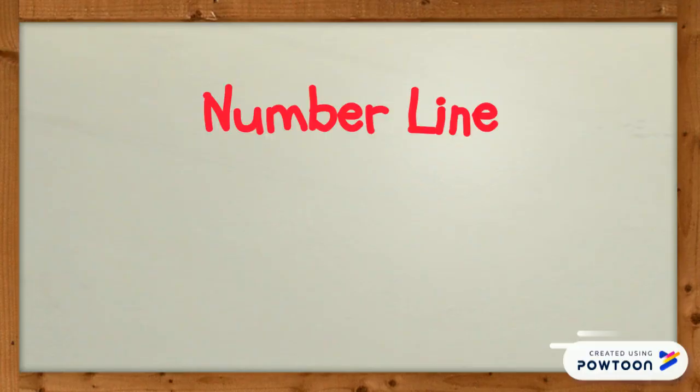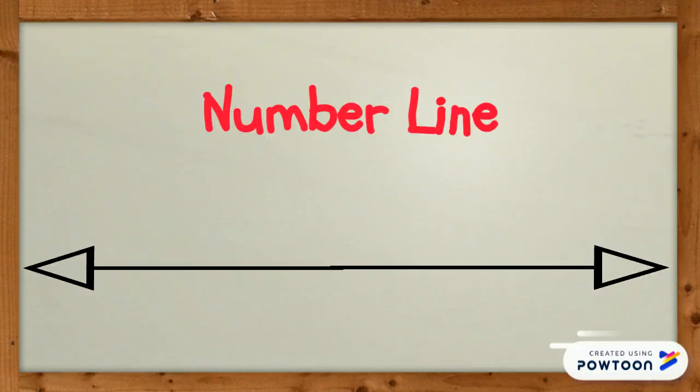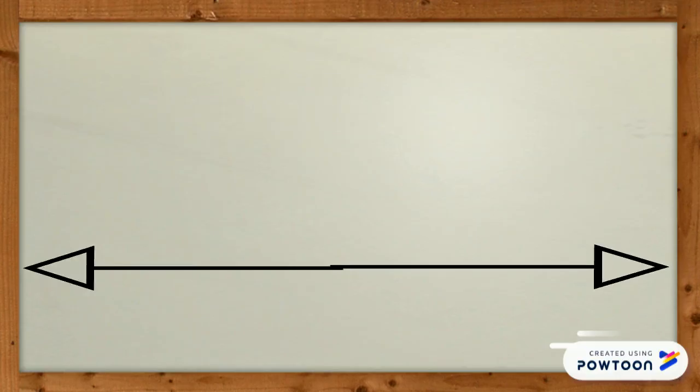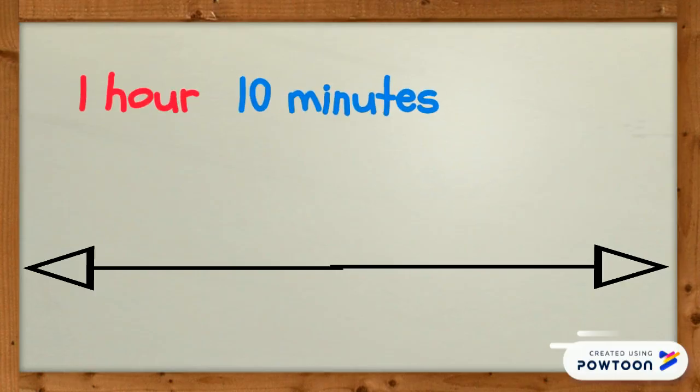To measure elapsed time, we are going to use a number line. Our number lines for elapsed time will count by intervals of one hour, ten minutes, and one minute.